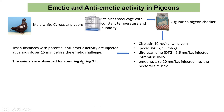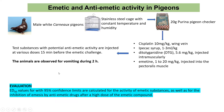The test substance with potential anti-emetic activity is administered at various doses 15 minutes before the emetic challenge. Without the drug, any one of the emetic compounds is administered and vomiting is observed for 2 hours. The test compound is administered before challenging with the emetic drug. Vomiting duration is observed for 2 hours. The ED50 value is calculated with 95% confidence limits for emetic substance activity as well as for inhibition of emesis by the anti-emetic drug after a high dose of the emetic compound.